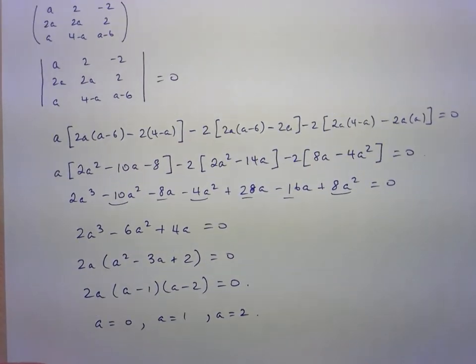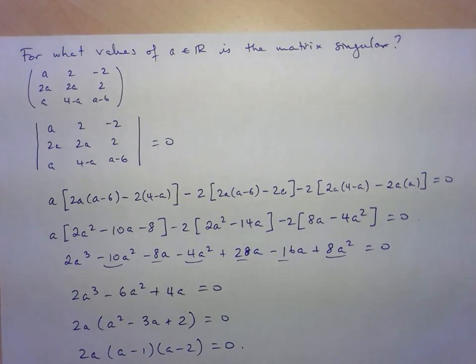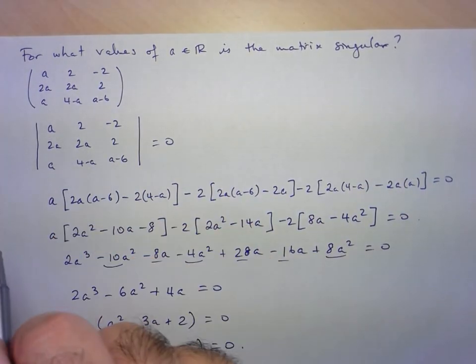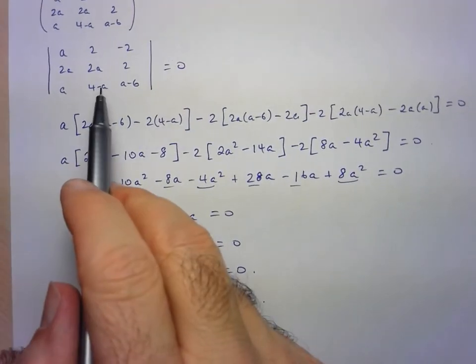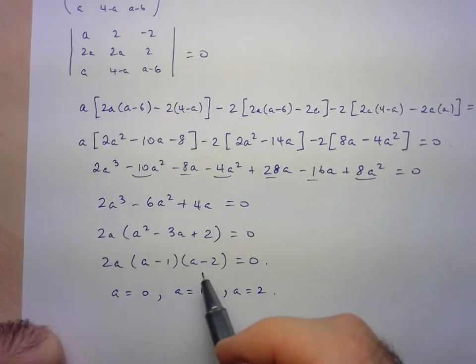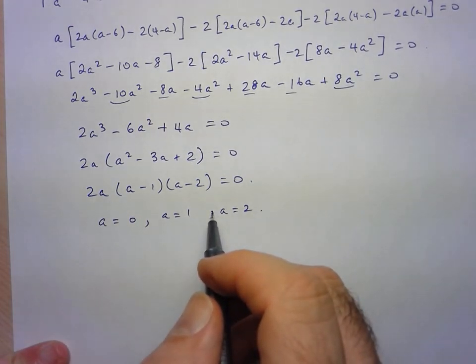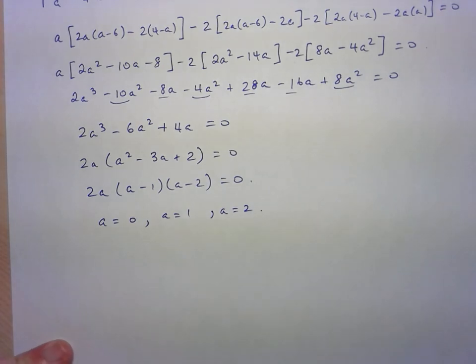So just to recap here. We know that a matrix is singular if and only if its determinant is equal to zero. So just took the determinant, set it to zero, did my algebra, and it turns out that we had three possible values to give us a singular matrix. That's it for this one.